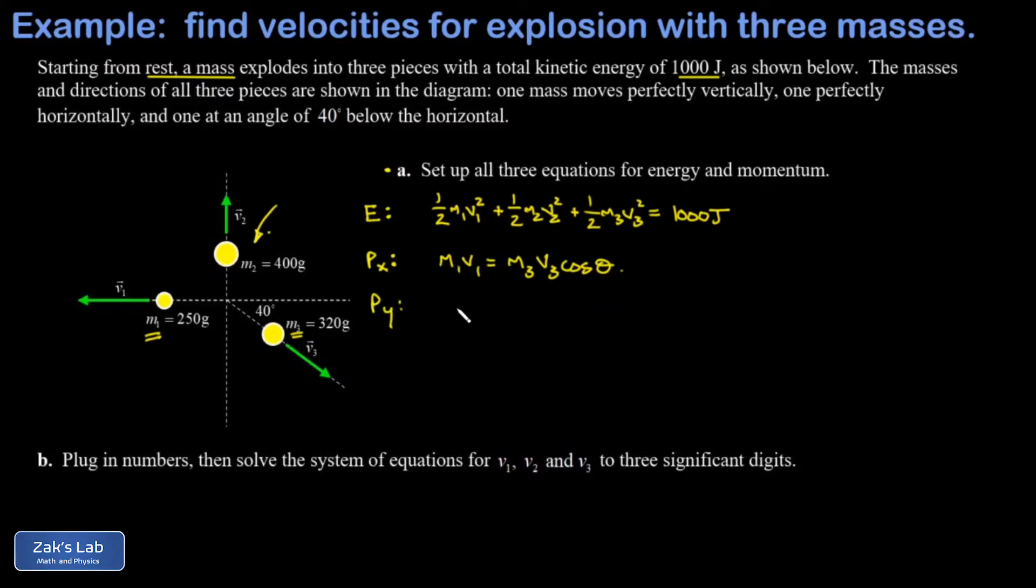Then I look at my y momenta. Again, I take this informal approach where I'm just saying I know it adds to 0, so all the upward momenta must be equal to all the downward momenta added together. Well, m1 is out of the picture now because it has no y component. I look at the upward stuff - that's m2 v2. It's got to be equal to the downward. That's m3 v3 sine of theta.